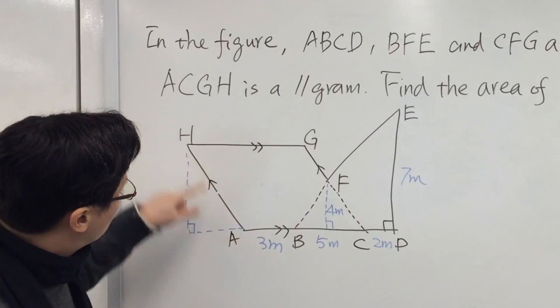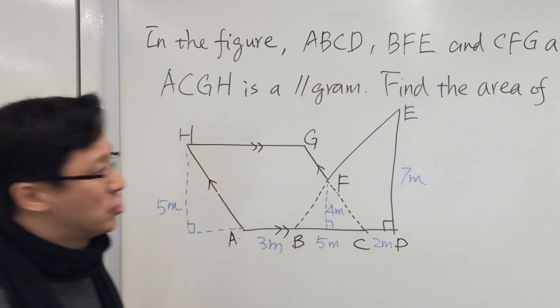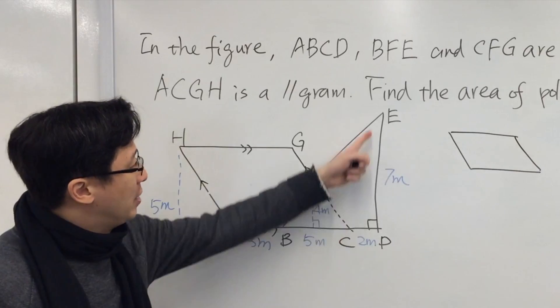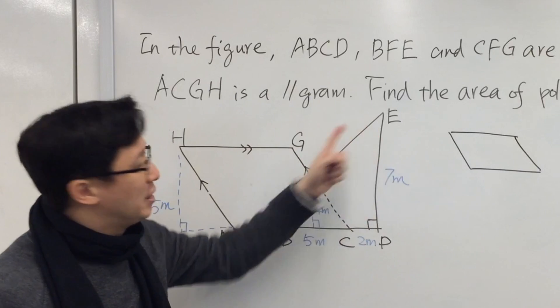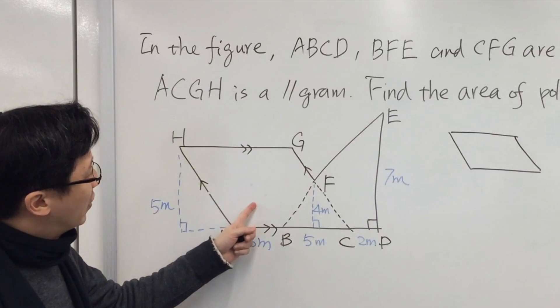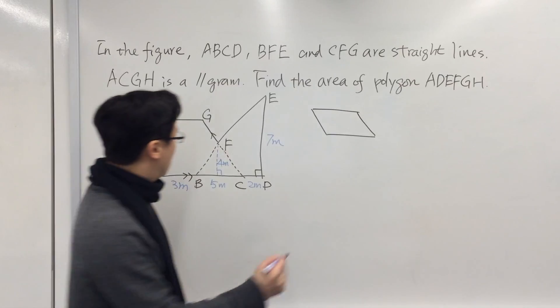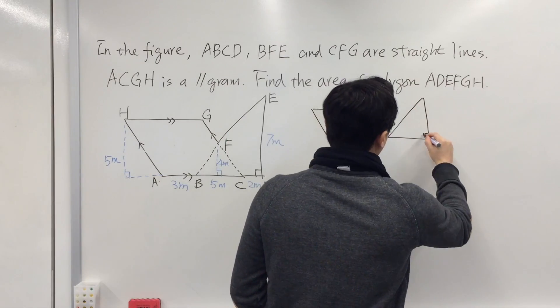We have parallelogram ACGH and triangle BDE. We can think of this figure as the sum of the area of the parallelogram and the triangle BDE, which is a right angle triangle.